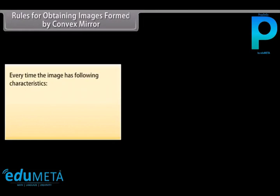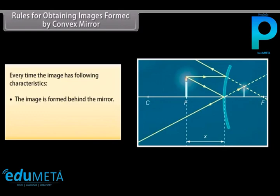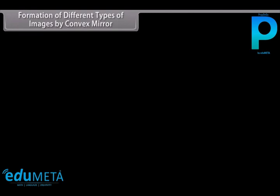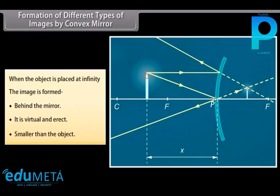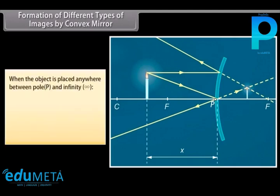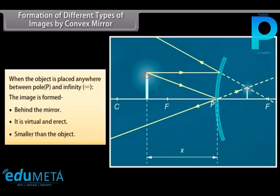For a convex mirror, the image always has the following characteristics: it is formed behind the mirror, it is virtual and erect, and smaller than the object. When the object is at infinity, the image is formed behind the mirror — virtual, erect, and smaller than the object. When the object is placed anywhere between pole P and infinity, the image is formed behind the mirror — virtual, erect, and smaller than the object.